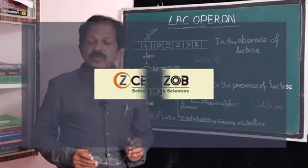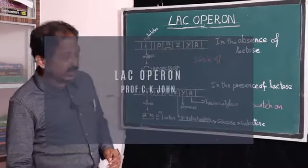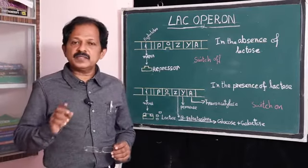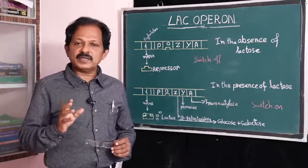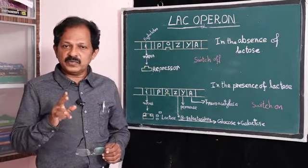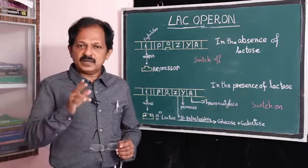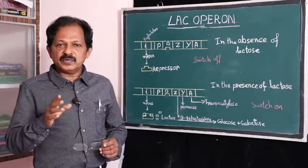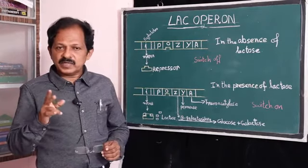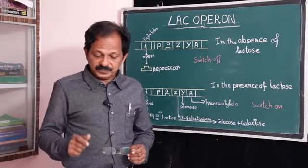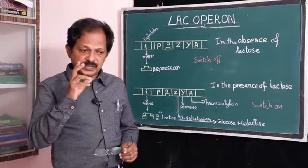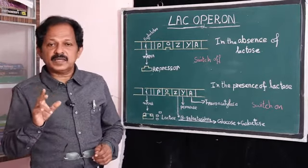Hello friends. Today's topic for our discussion is the Lac Operon. First, you need to understand what an operon is. All the genes which control a metabolic reaction constitute an operon. Lactose is a disaccharide which can be converted to glucose and galactose. The genes which control the metabolic conversion of lactose into glucose and galactose form the Lac Operon. This concept of gene regulation is known as the operon concept, put forward by Jacob and Monod.